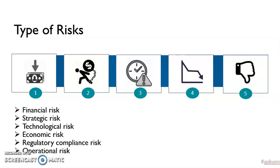Next is regulatory compliance risk, meaning changes in government regulations require us to adapt. For example, right now the government requires all companies and businesses to follow the SOPs it has provided. This is a risk that the company has to try to solve. And last is operational risk, which might involve problems with workers or the production process itself. These are the six different types of risk.